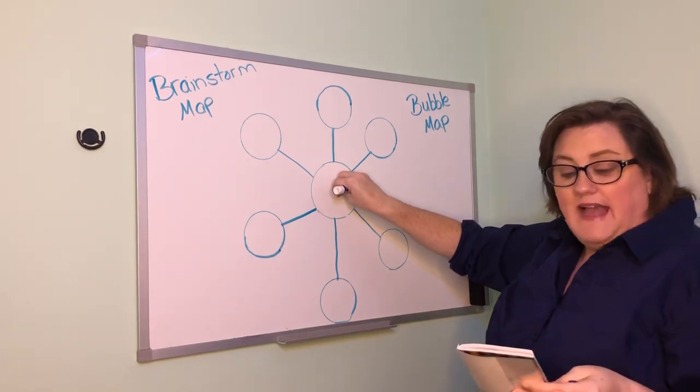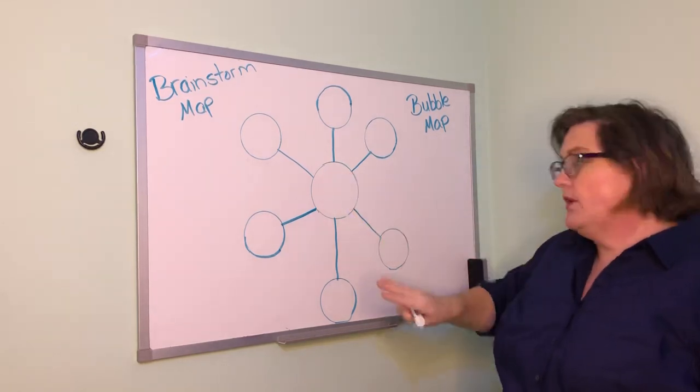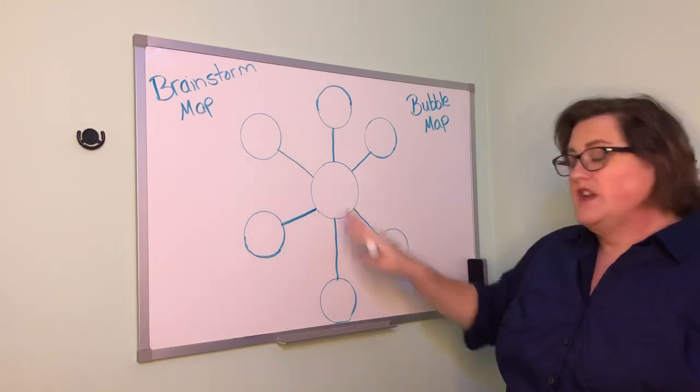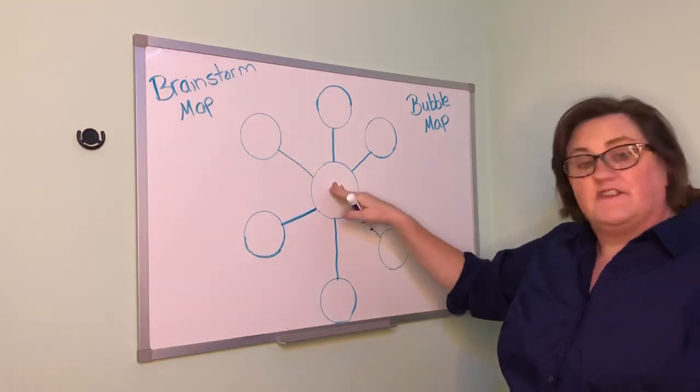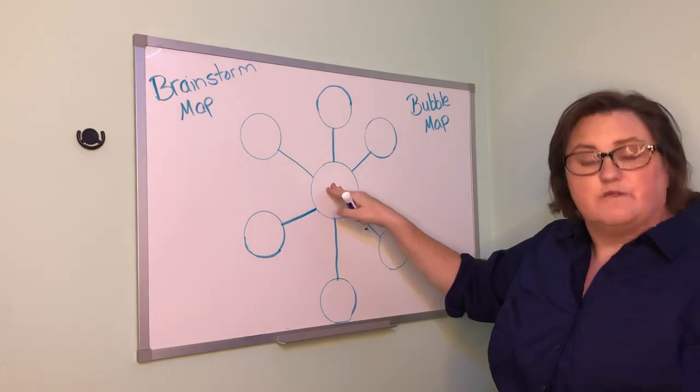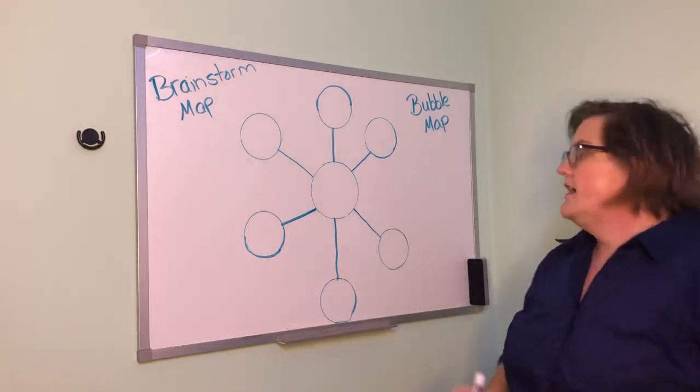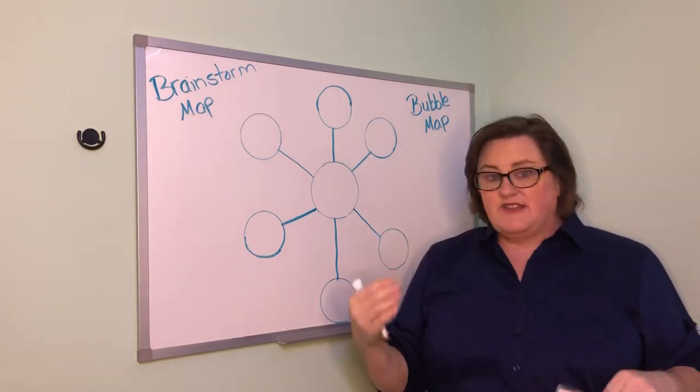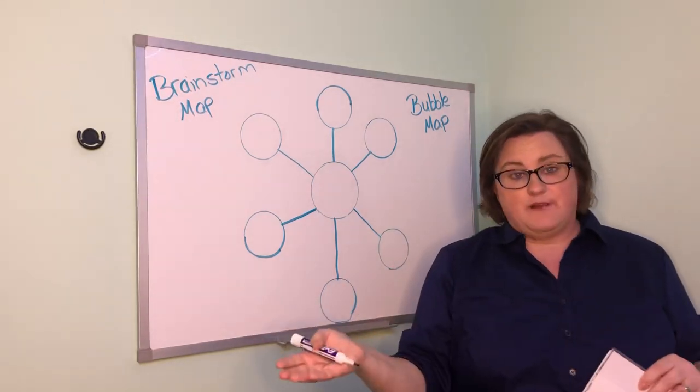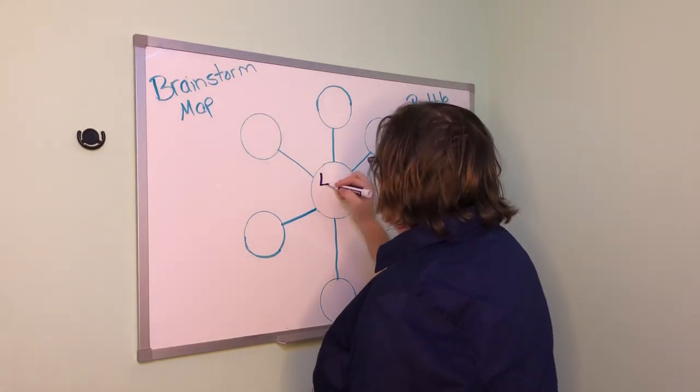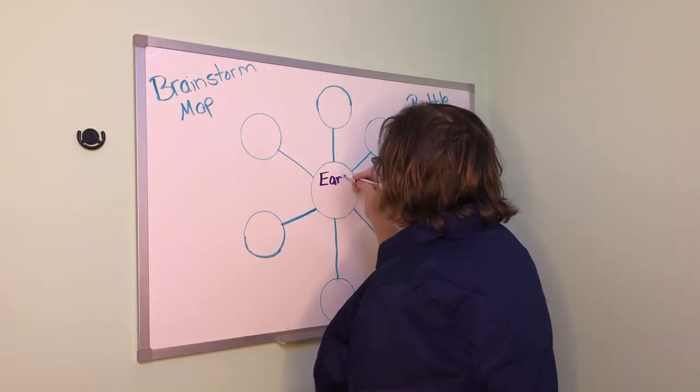So for example, Addison read Awesome Ants, so her topic would be ants. Enan read Firefighters, so his topic would be Firefighters. And Mia read Dogs at Work, so her topic would be Working Dogs. So the book I read yesterday, and it was one of our read aloud books, is Earth Day. So I'm going to write Earth Day here in the middle as my topic.